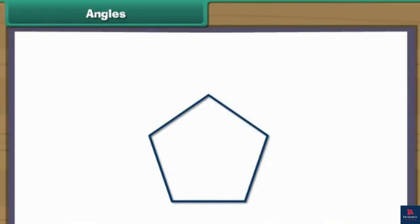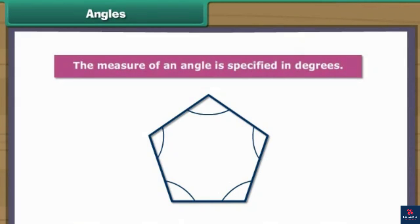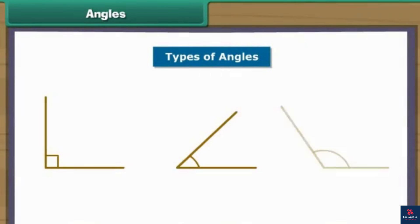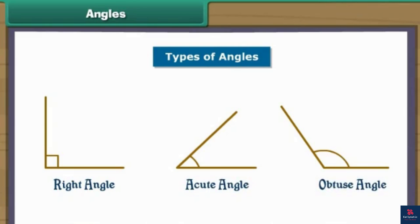Any two adjacent sides of a polygon form an angle between them. An angle is the space between two lines, line segments or rays that move away from one another from a common point. The measure of an angle is specified in degrees. There are three types of angles: right angle, acute angle and obtuse angle.